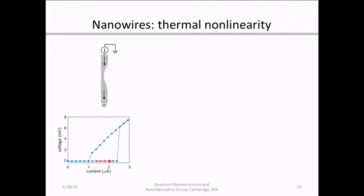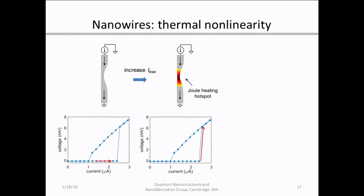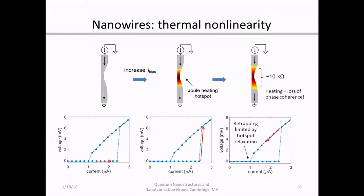Nanowires, on the other hand, have a different type of nonlinearity — more of the bistable physical state — because they largely act thermally. To walk through the basic thermal transitions: the nanowire starts in the superconducting state with current applied and no voltage forming. If we increase the bias current past the critical current of the device, you jump sharply into the resistive state and a voltage is formed. In the device itself, you end up with a Joule-heated hotspot, with impedance on the order of one to ten kilohms.